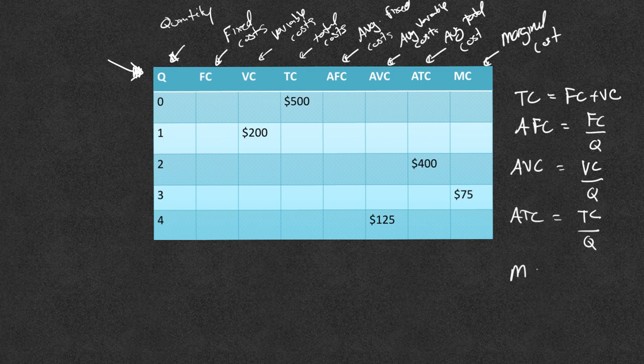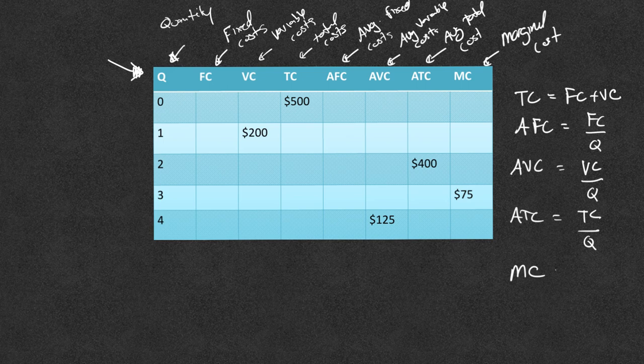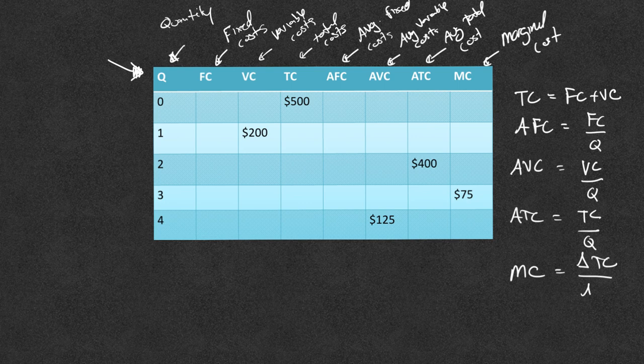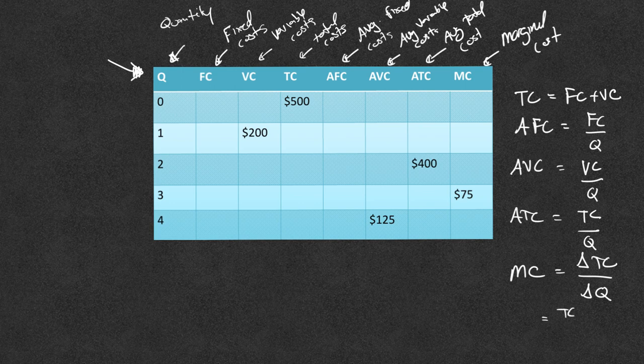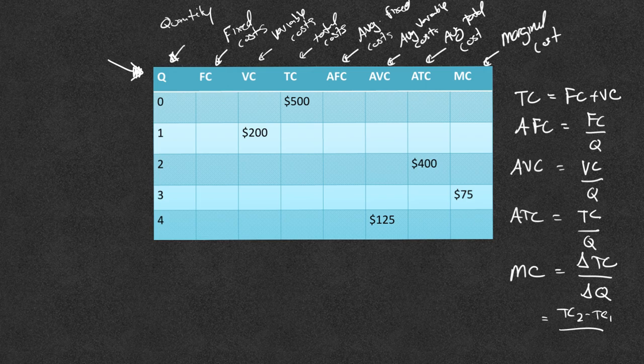And then your marginal cost which is the most difficult of these is going to be how your total cost changes with respect to how your quantity is changing. Another way to think about this is like total cost 2 minus total cost 1. So like your second value and then your quantity 2 minus quantity 1. So it's going to be your changes.